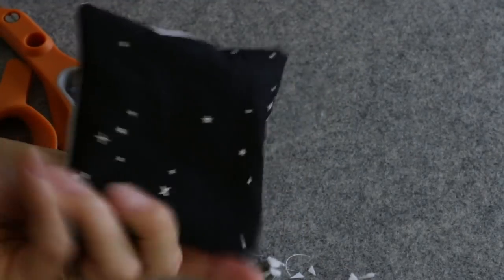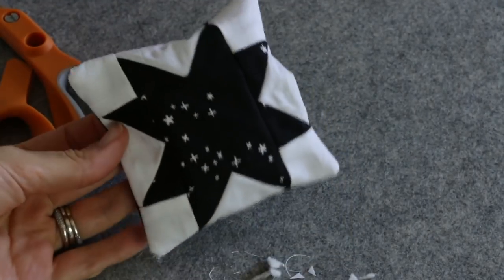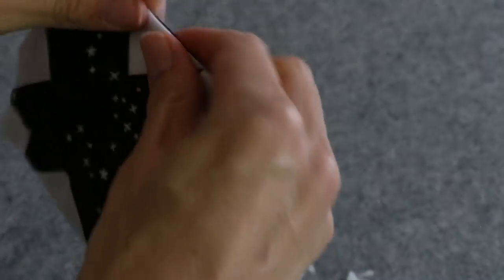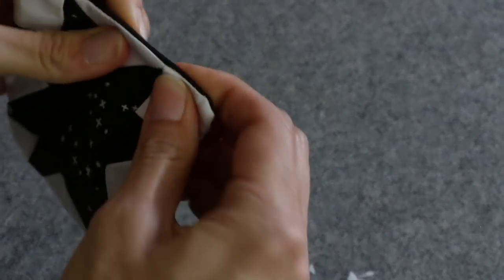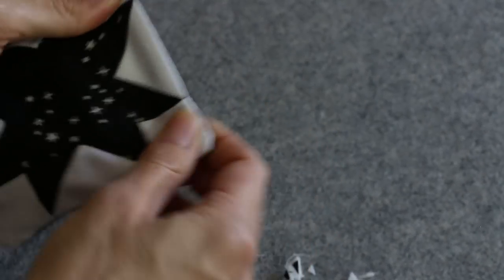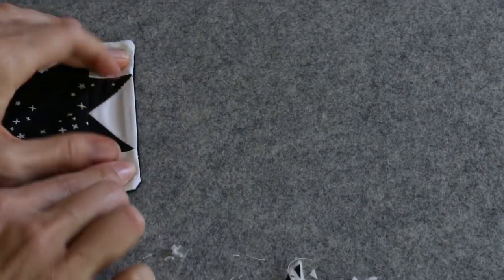All right, there we go. So now you want to press it. Make sure that iron is on and I like to roll that seam in between my fingers just to get everything nice and flat that way, so there's no bulk stuck in the seam.